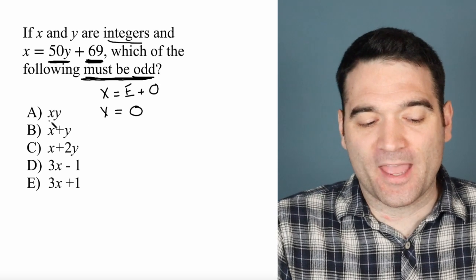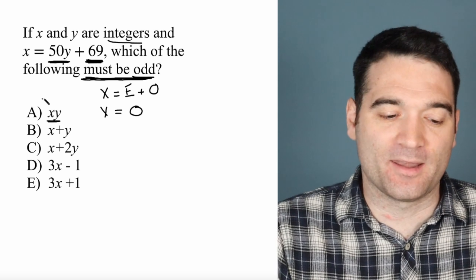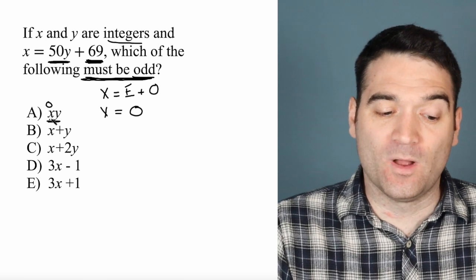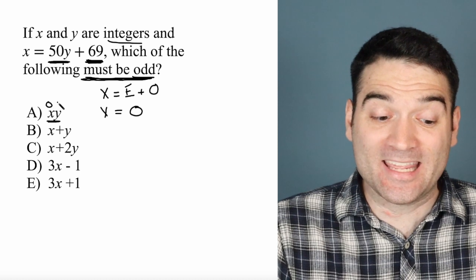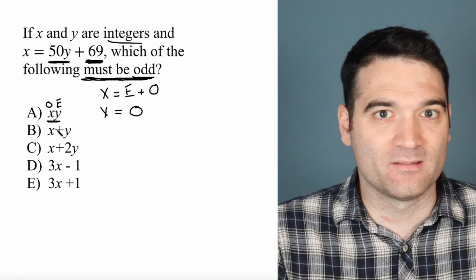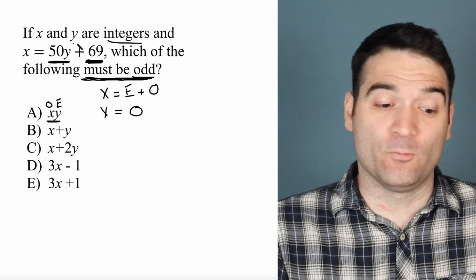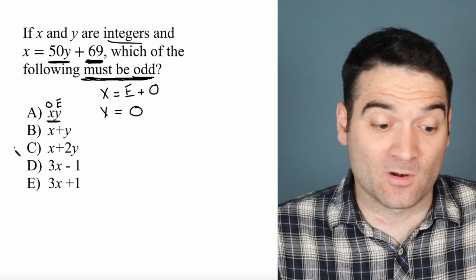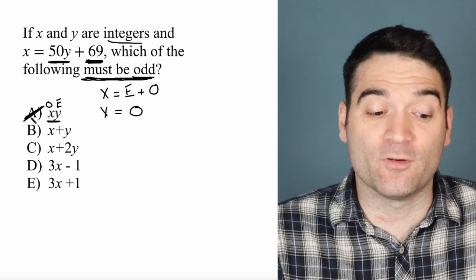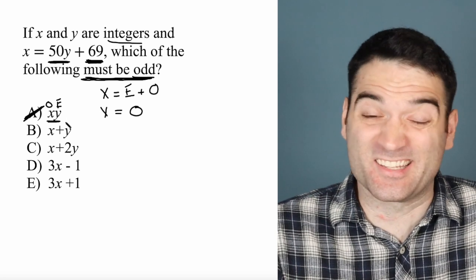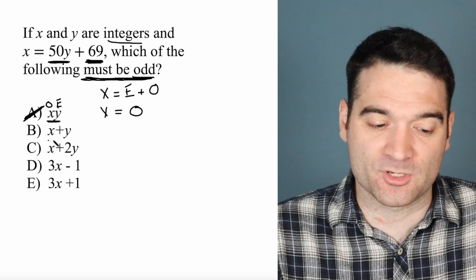So let's start with x times y. Does x times y have to be odd? We know that x is an odd number. Well, an odd times an even is not odd. An odd times an even is an even. We don't know what y is. Y could be even or odd. We don't have any info on y. So that's not necessarily true. We want something that must be odd, without exception.